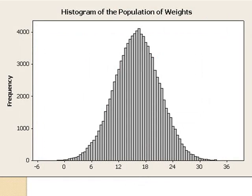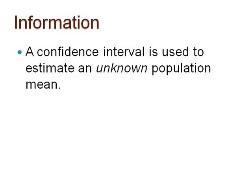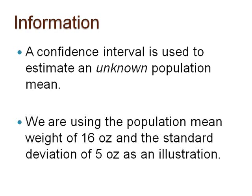We knew the distribution of weights was normal, the mean was 16 ounces, and the standard deviation was assumed to be 5 ounces. Remember, a confidence interval is used to estimate an unknown population mean. We used the mean of 16 and the standard deviation of 5 ounces in the pretzels example as an illustration. We are not using the heights of adult males in Virginia example here because we never made an assumption about what the population mean was — we were trying to estimate that value.